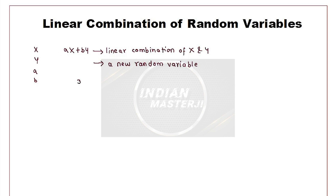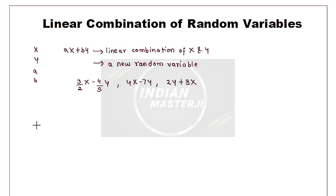I can have something like (3/2)x minus (4/5)y, or I can have something like 4x minus 7y, or I can have something like 2y plus 3x. All these are nothing but examples of linear combination of x and y.